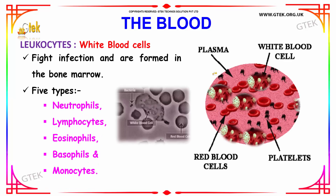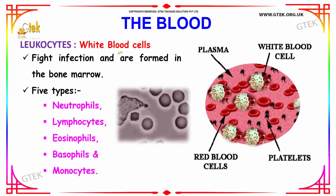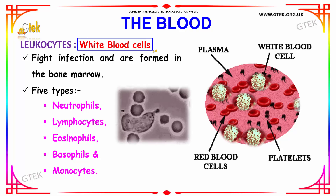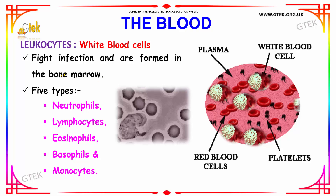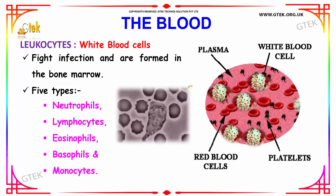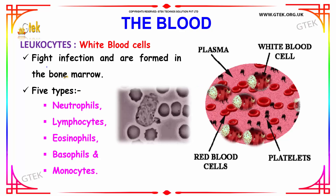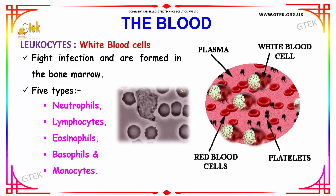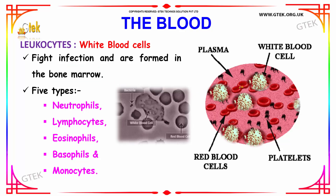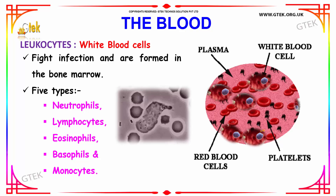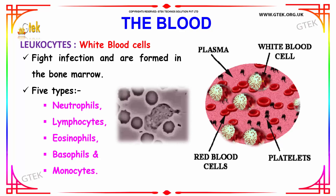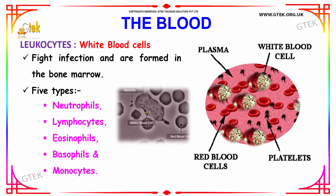You can see the red blood corpuscles, which are erythrocytes. The next element is leukocytes, which are the white blood cells. White blood cells help in fighting infections and any other foreign bodies entering the blood. White blood cells are formed in the bone marrow. Here you can see the RBCs and white blood cells present in the plasma.